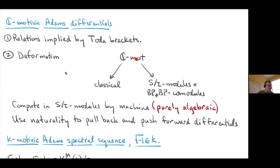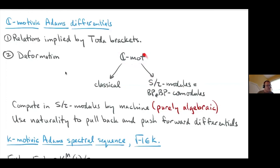BP-star BP is an entirely known algebraic thing — complicated but computed — playing the role of the Steenrod algebra in BP theory. The idea is to compute in S-mod-tau modules by machine because it's entirely algebraic comodules, then use naturality to pull back differentials and push differentials, giving a huge number of Adams differentials. This is a big advantage — many differentials that would normally require topological input are obtained by machine.